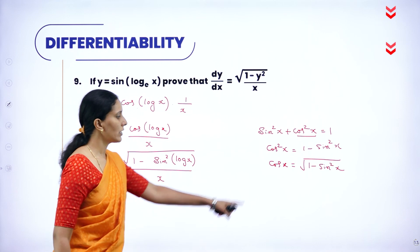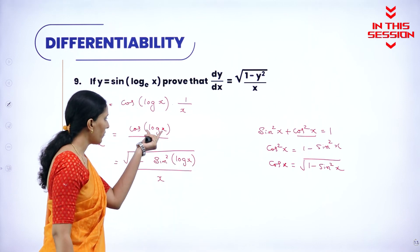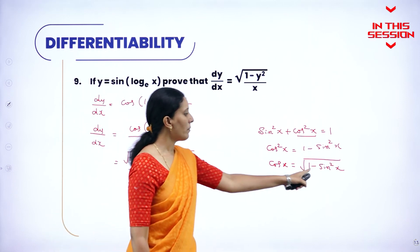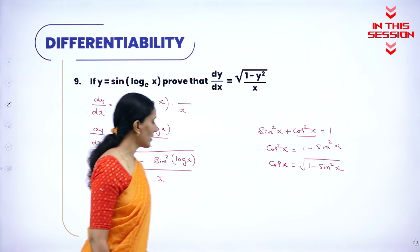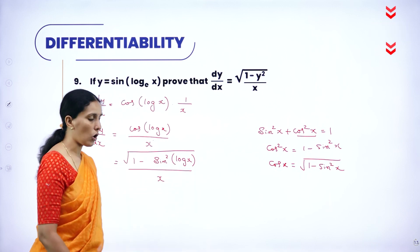So using the same concept here, in the place of x you have log x. So 1 minus sine square x becomes 1 minus sine square log x.